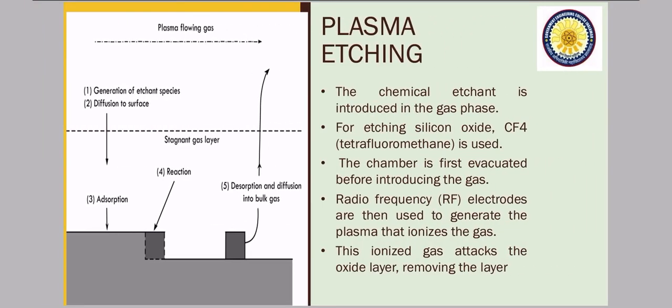Coming on to plasma etching. In plasma etching, the chemical etchant is introduced in the gas phase. For example, I have given here for silicon oxide, CF4, tetrafluoromethane is used. The chamber is first evacuated before introducing the gas so that no contamination and no other particle has been there. It can be fully evacuated before using the etchant gas which we will introduce in the gas phase. RF frequency electrodes are used to generate the plasma that ionizes the gas.